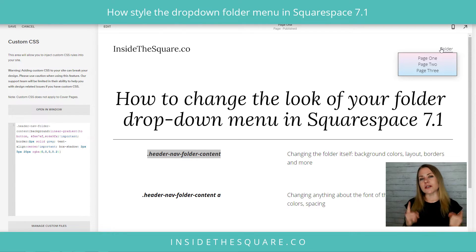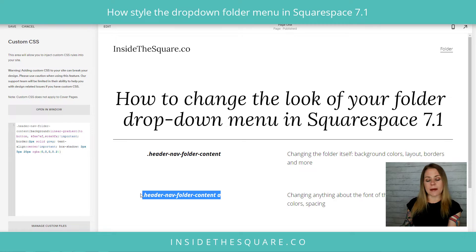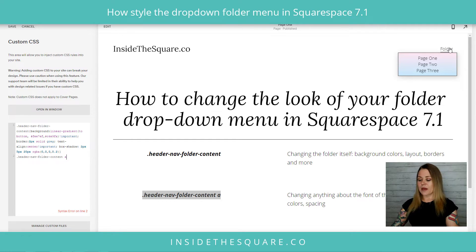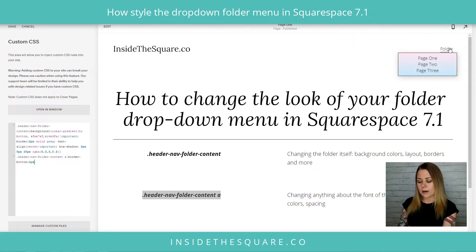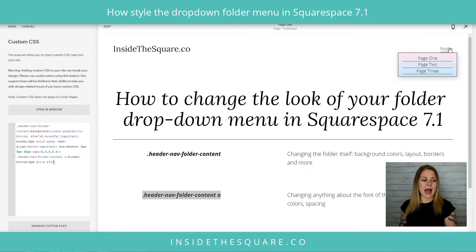Now I want to mention using the letter 'a' to change the spacing between those active links or anything about the font in those active links. I'll copy that from my page and show you how it works. I'll enter a new line: 'header nav folder content a', open a curly bracket, and say 'border-bottom: 1px solid gray'.